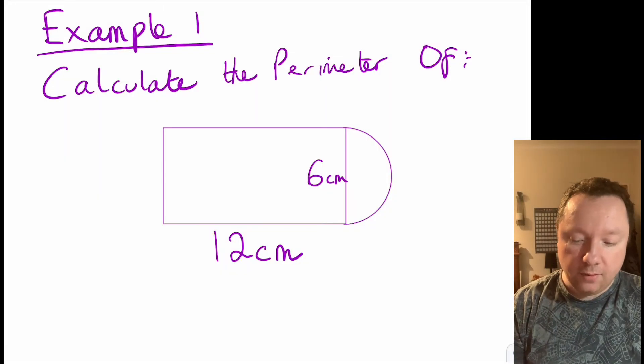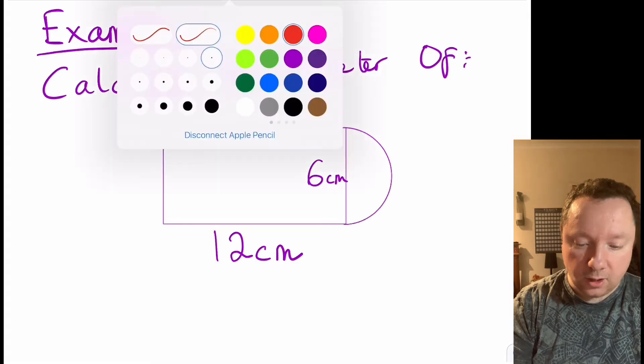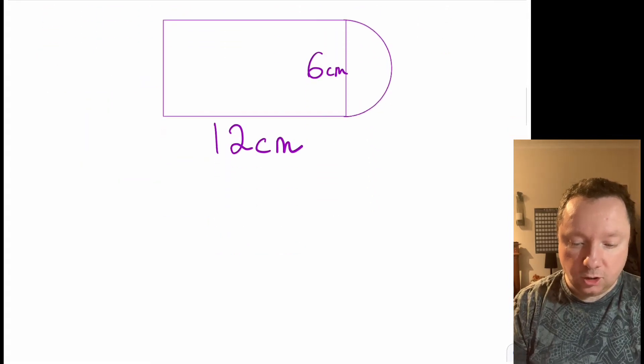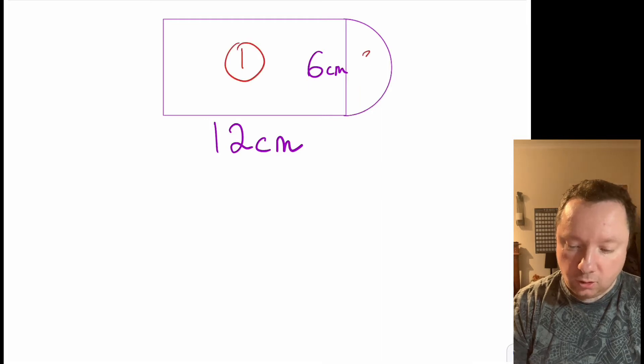So I'm going to look at the rectangle and the semicircle separately. Okay, so let's look at the rectangle to start with because that's easy. So if I just draw a little sketch of rectangle, I'll call this one and two so you can see what's happening.